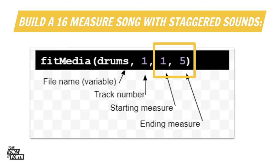Have you heard many songs that are only eight seconds long? Maybe on a TikTok video. However, your remix song will need to be at least 30 seconds or 16 measures. So how do we extend our eight-second or four-measure song to 30 seconds or 16 measures? When you listen to Entrepreneur or another favorite song, you may notice not all instruments or vocals start at the same time. In fact, the first measure of Entrepreneur is silent. You can change the starting or ending measure of your fitMedia functions to achieve the effects you want. Your challenge today is to build a 16-measure song that uses 10 different sounds or tracks — you can add more tracks and play with fitMedia to code your song.